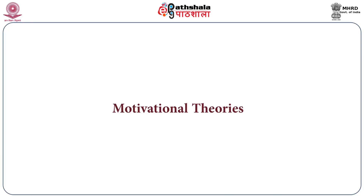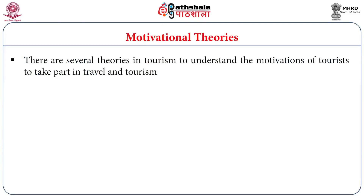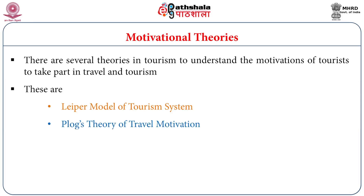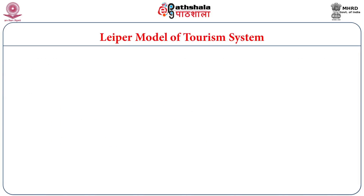There are many motivations pulling travelers to different types of destinations, resulting in varieties of tourism forms. Certain theories propounded by academicians include Leiper's Model of Tourism System, Plog's Theory of Travel Motivations, and the Push and Pull Theory of Motivation. These three are the most significant theories to examine in detail.